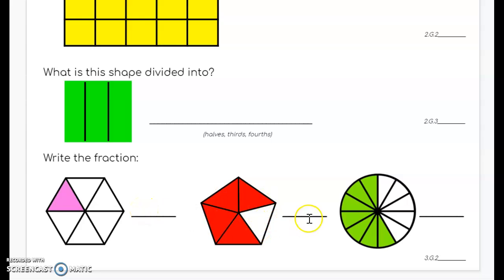This shape, the pentagon, goes to this line. You're going to write me the fraction. Remember the color is your numerator. And the circle goes to this line. And also remember the color is your numerator.